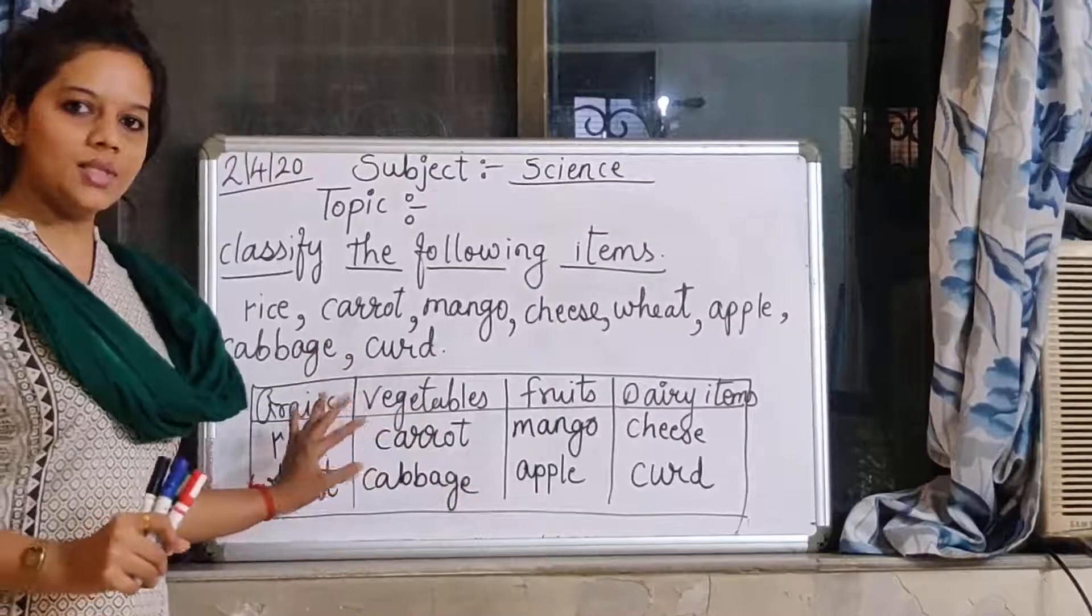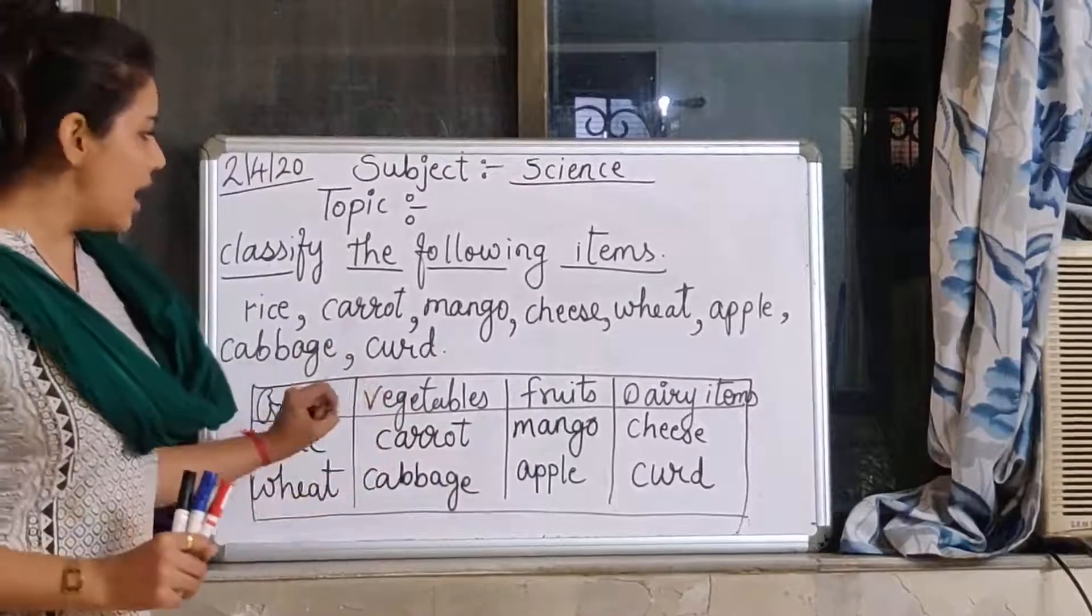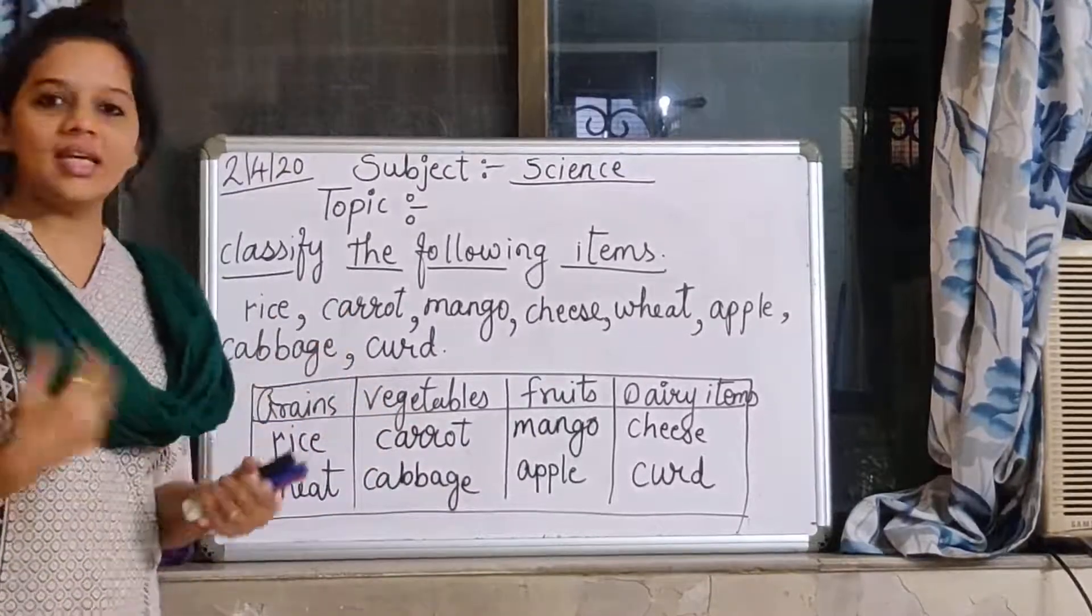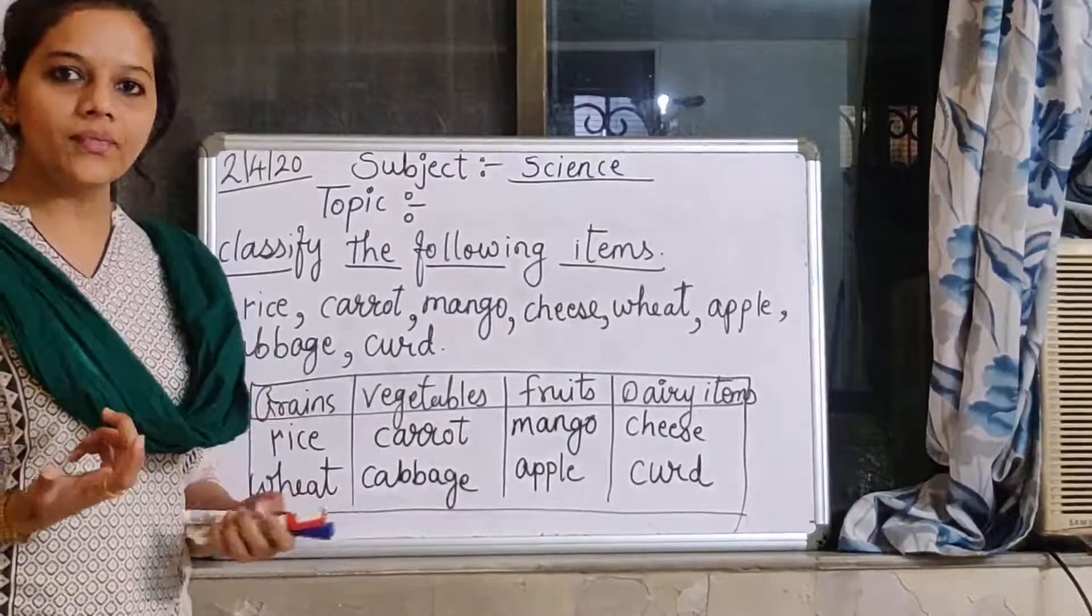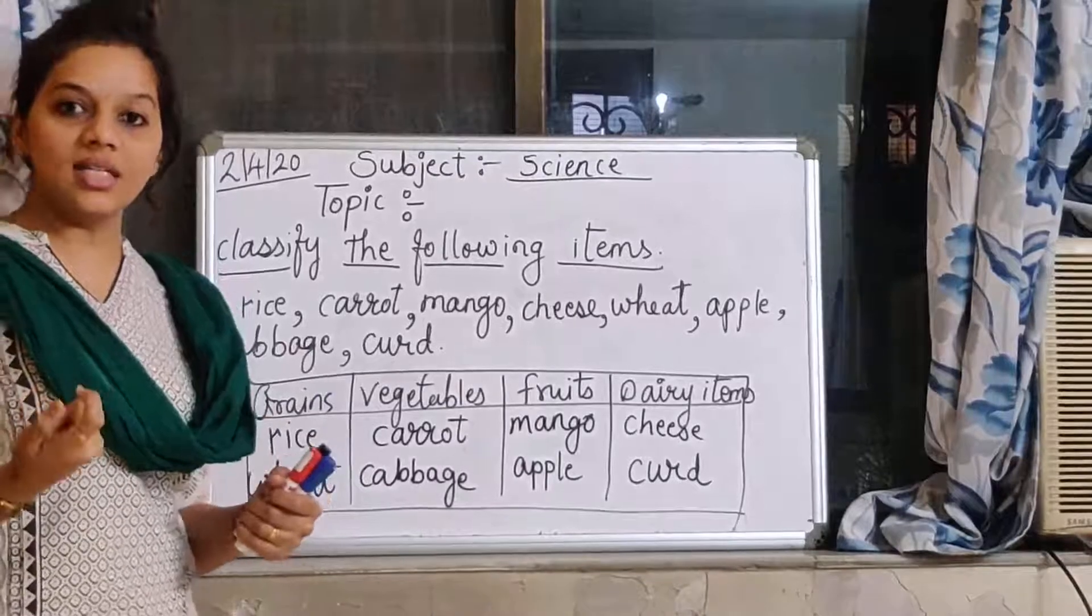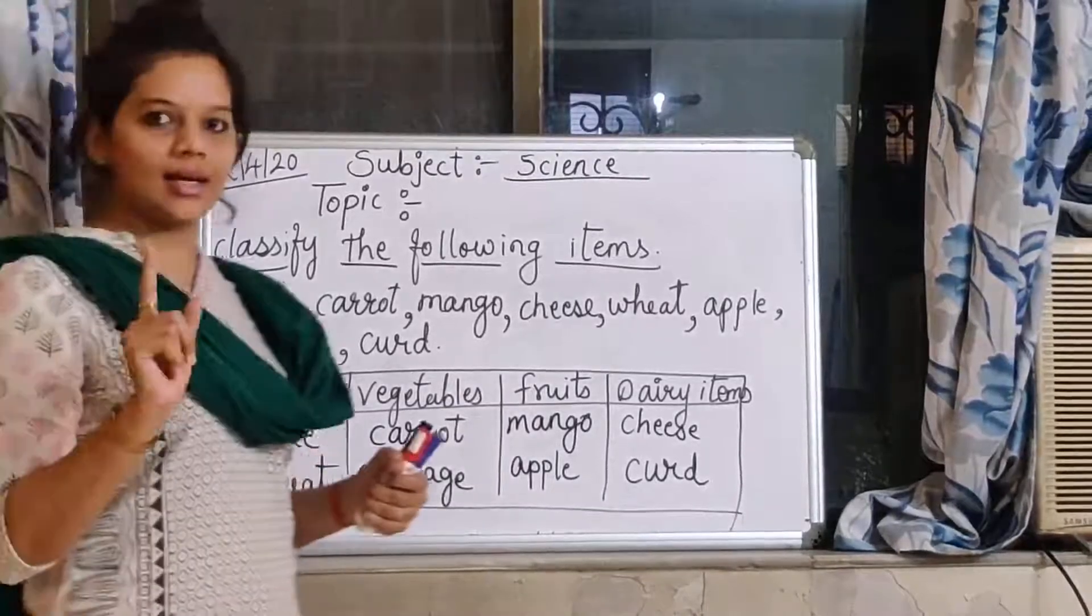Now what are these all items? These all are food items. Food items we eat every day. Right? We eat food every day. Why do we eat food every day? Because to get energy. Correct. You all are correct.